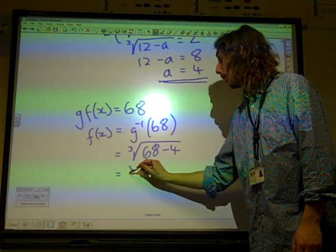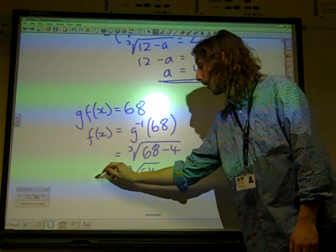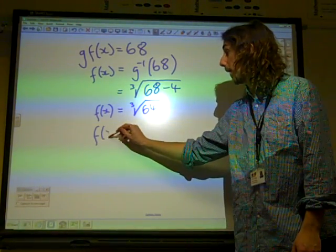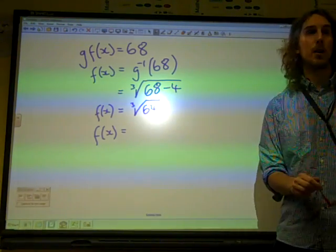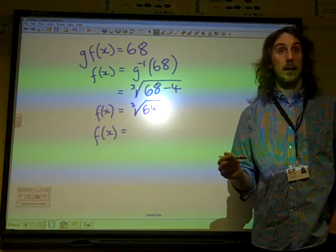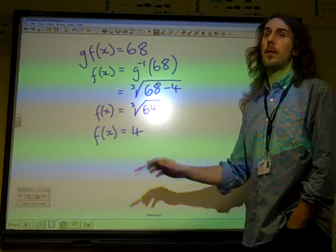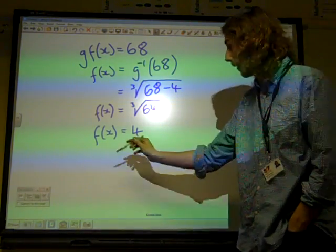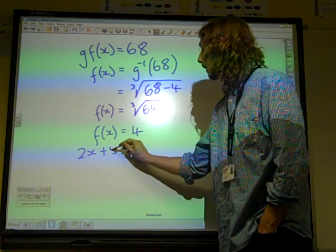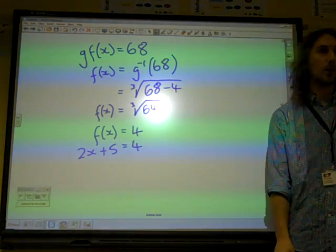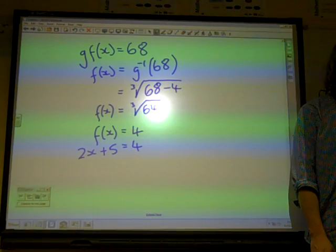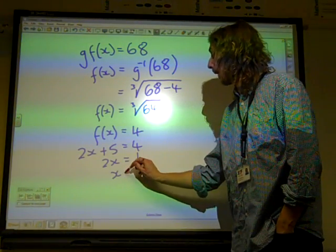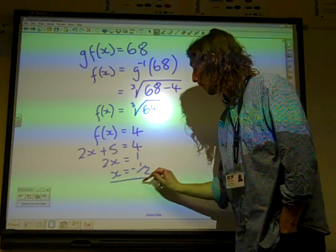So the cube root of 64. That's quite a nice feeling because we can handle that. The cube root of 64 would be 4. So f(x) = 4. Except f(x), that's easy as well. f(x) was 2x + 5. So 2x + 5 = 4. We rearrange this. We get 2x = -1. So x = -1/2.